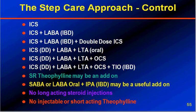The step-care approach for control of asthma — now we are discussing prevention and controlling asthmatic attacks. The first drug is inhaled corticosteroids. If not controlled with inhaled corticosteroids, add a long-acting bronchodilator like formoterol or salmeterol. ICS plus LABA, not controlled — increase the dose of ICS, double the dose. Still not controlled — ICS double dose plus LABA plus a leukotriene modifier like Montelukast.